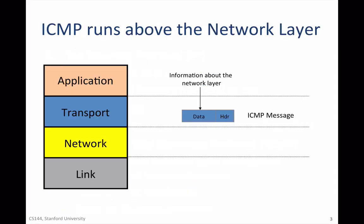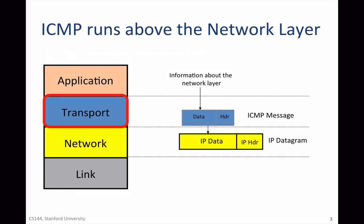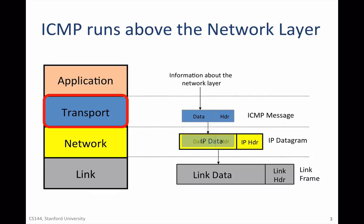ICMP runs above the network layer, and so strictly speaking, it's a transport layer protocol. When an end host or router wants to report an error using ICMP, it puts the information it wants to send back to the source into an ICMP payload and hands it to IP to be sent as a datagram.